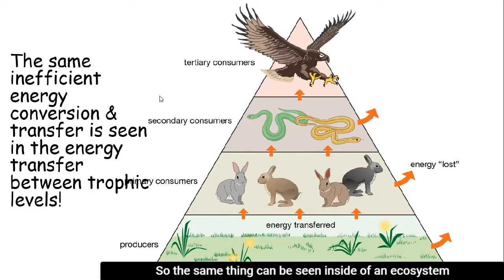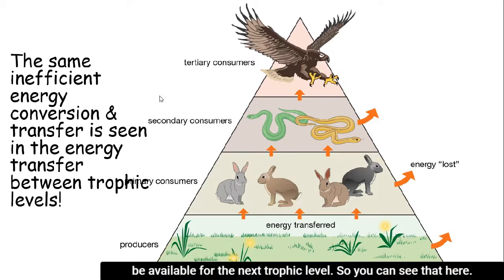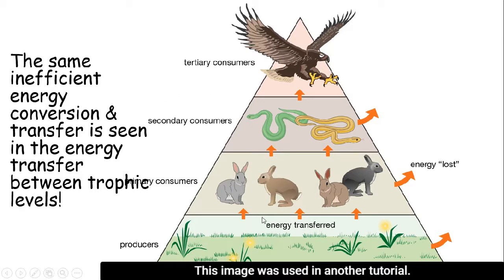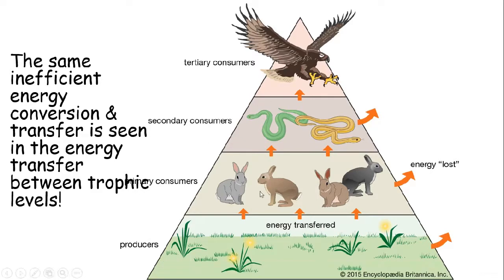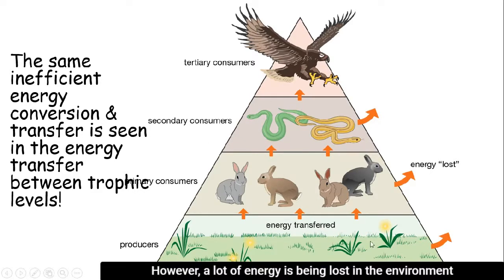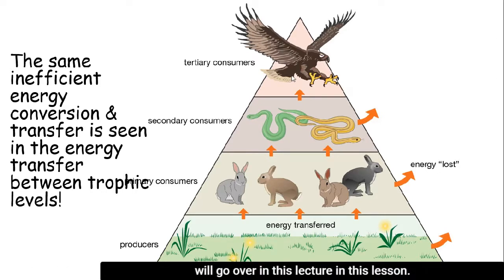The same thing can be seen inside of an ecosystem. As energy is being transferred and moved up from one trophic level to the next, not all of the energy available inside of the organism is actually going to be available for the next trophic level to use. We can see different energy being transferred up the different trophic levels, but a lot of energy is being lost to the environment. Producers lose energy due to cellular respiration, and there are other ways that consumers lose their energy, which we'll go over in this lesson.